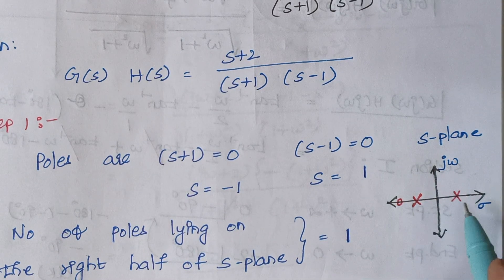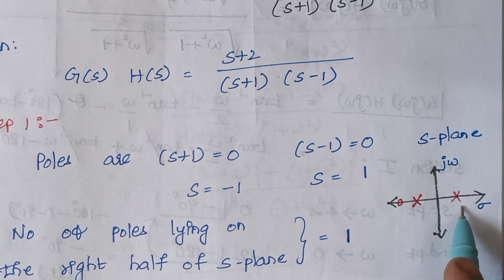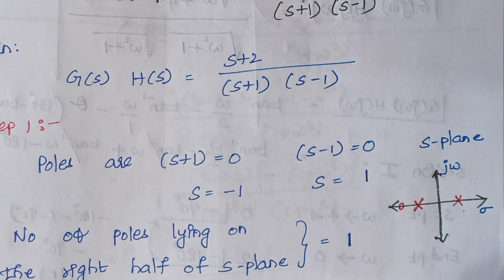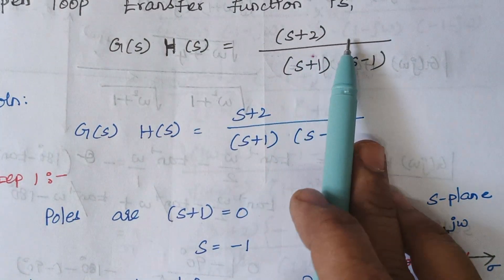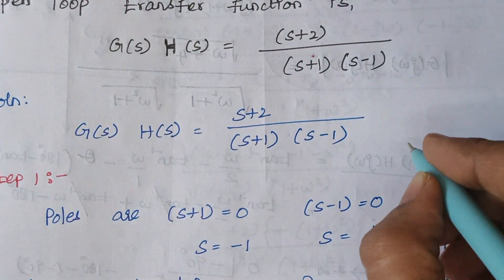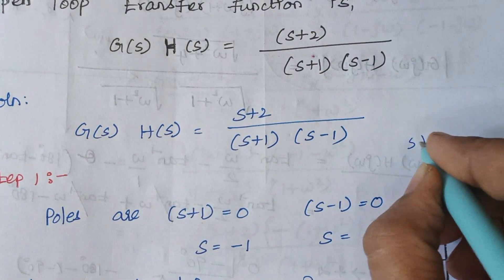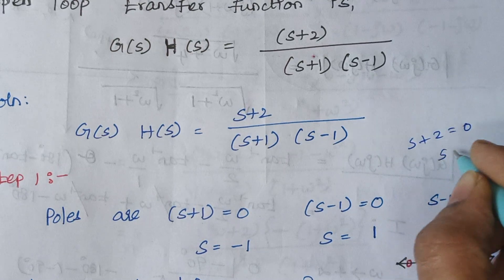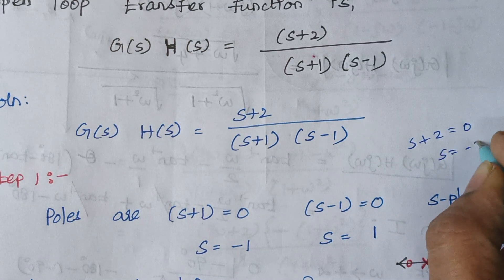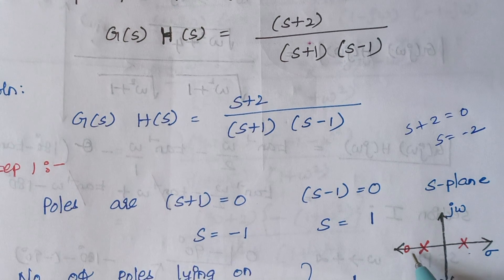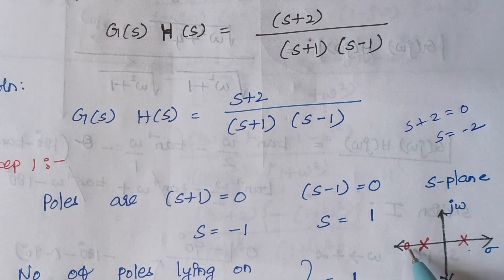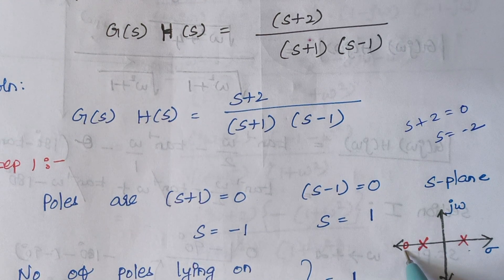One pole is at minus 1 and another is at plus 1. For the zero: s plus 2 equals 0, so when s plus 2 equals 0, the value of s is minus 2. Zeros are usually marked by a small circle, so here is our minus 2.